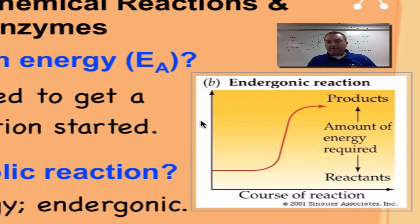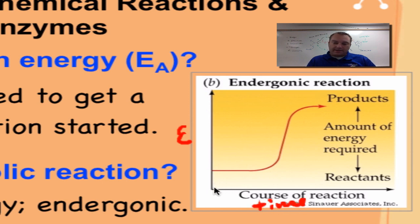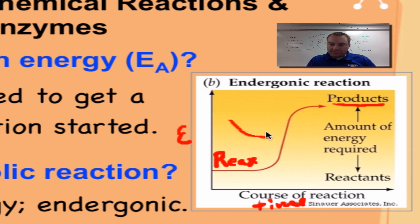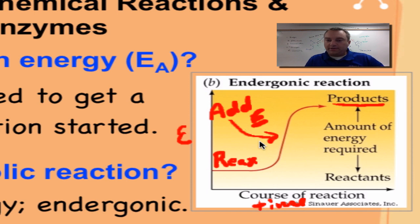Endergonic reactions are best described by this graph. On the y-axis we have energy — low to high — and on the x-axis we have time. This plateau represents the reactants, and up here we have the products. In order to get the reactants to turn into the products, we have to add energy. The upward slope means you're adding energy, and because we've absorbed energy, the products contain more energy than the reactants.